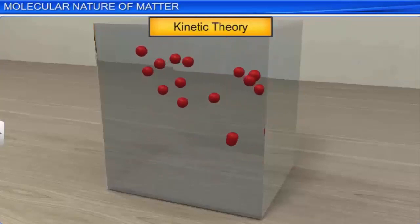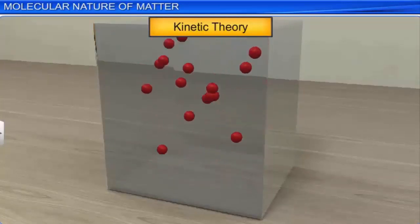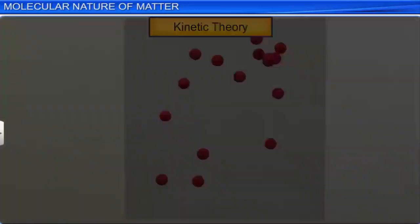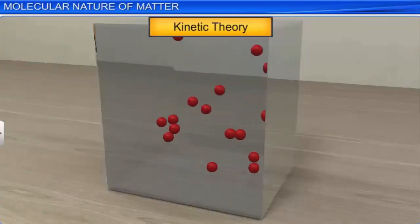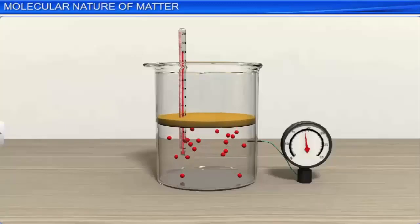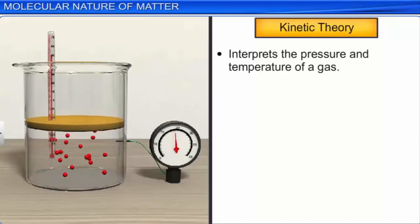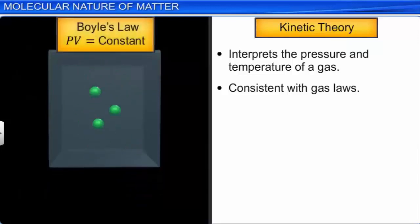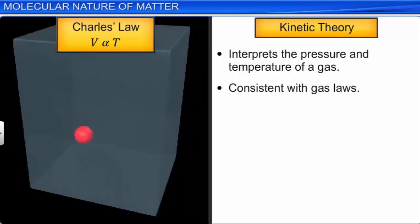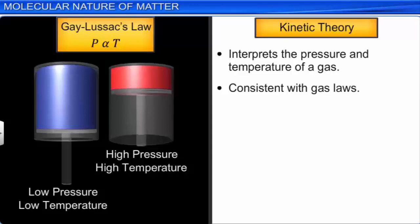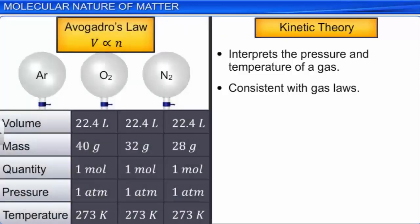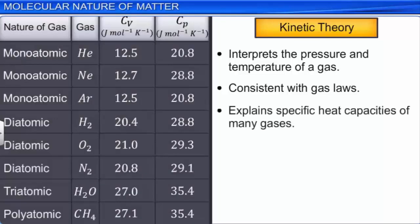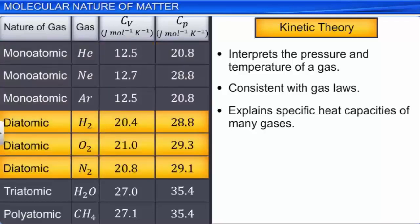Kinetic Theory explains the behavior of gases based on the idea that gas consists of atoms or molecules which are in constant random motion. Kinetic Theory has widespread applications. This theory leads to the molecular interpretation of pressure and temperature of a gas. It is also consistent with gas laws like Boyle's law, Charles' law, Gay-Lussac's law and Avogadro's hypothesis. Kinetic Theory helps explain the specific heat capacities of many monoatomic, diatomic and polyatomic gases.